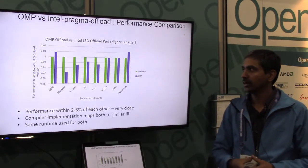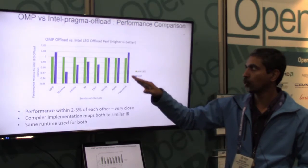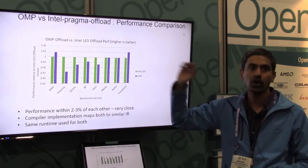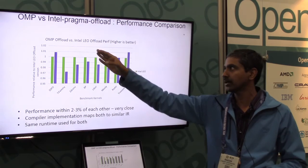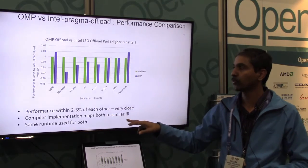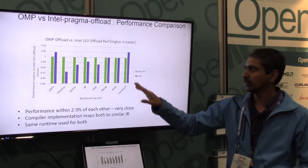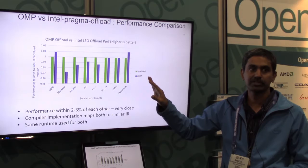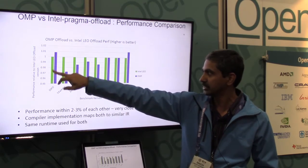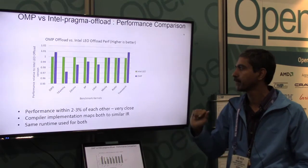This is a collection of simple benchmarks run in-house using the OpenMP offload versions as well as Intel LEO — the language extensions for offload. LEO predates OpenMP, but internally the implementation for both is more or less similar: both map to similar IR and the same runtime is used for both. We don't expect a large performance difference between the two, and that's exactly what the graph shows — the range is just between 0.97 and 1.01, so performance is more or less similar for all versions.